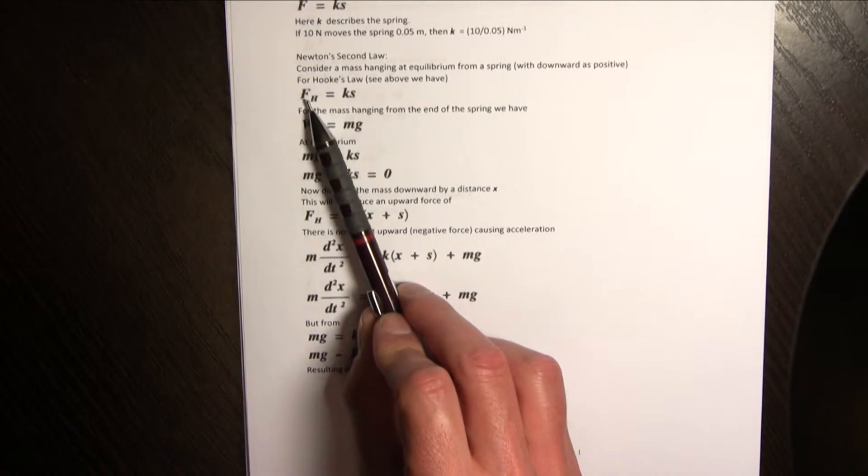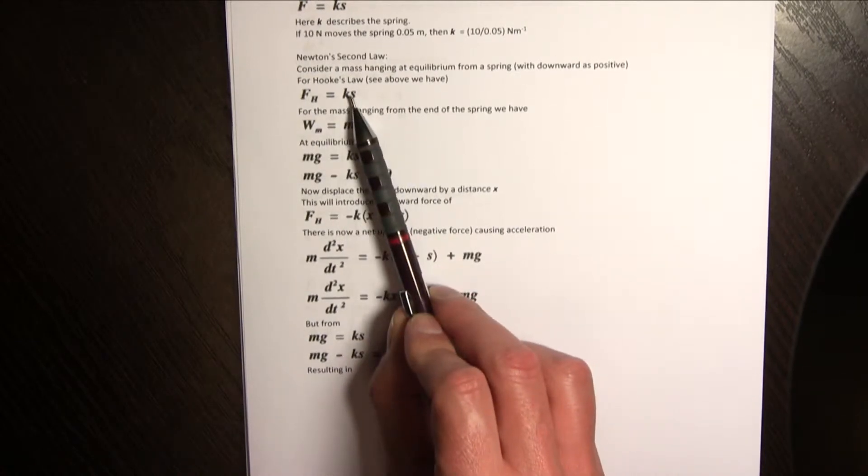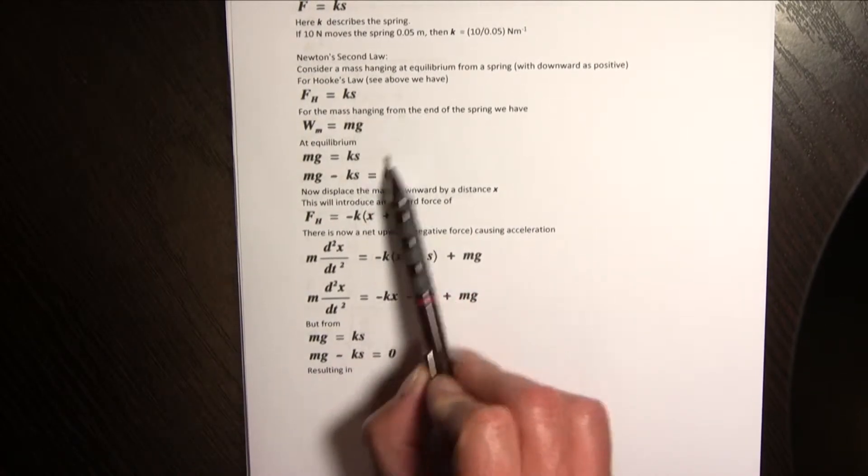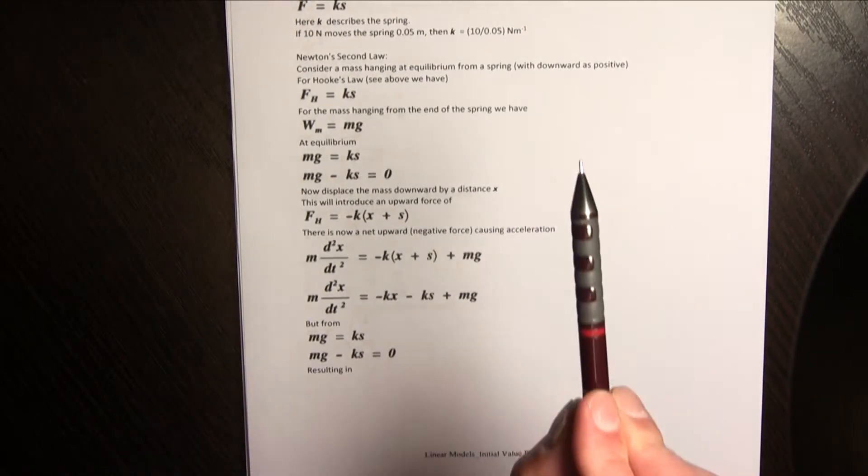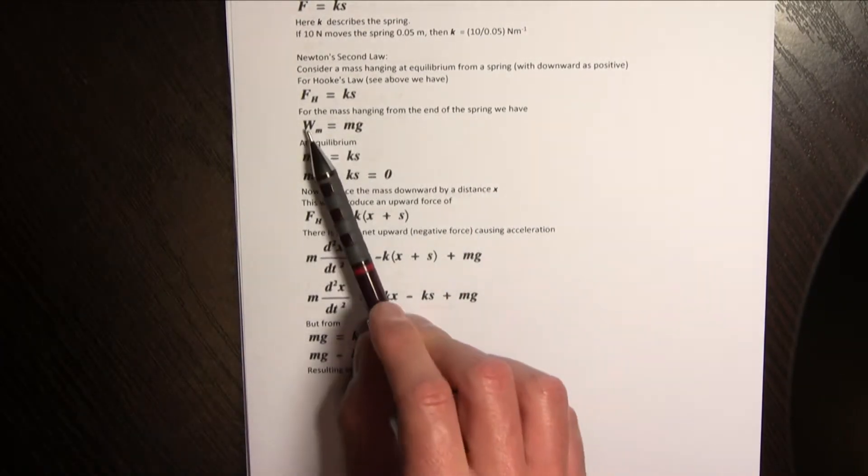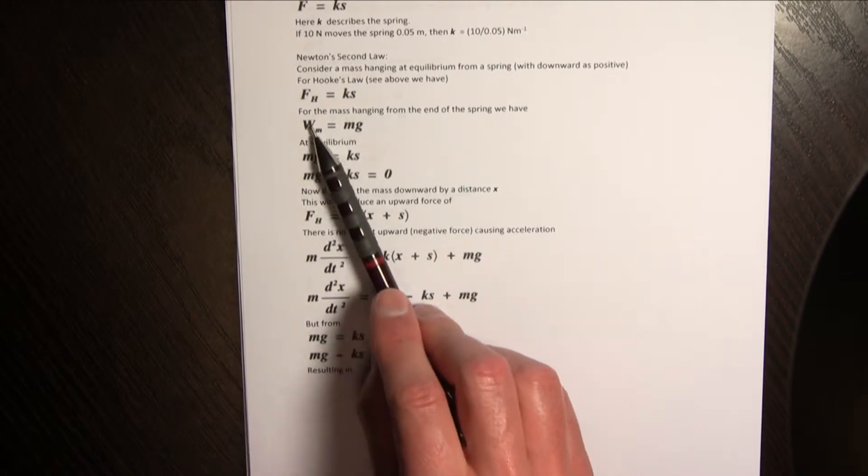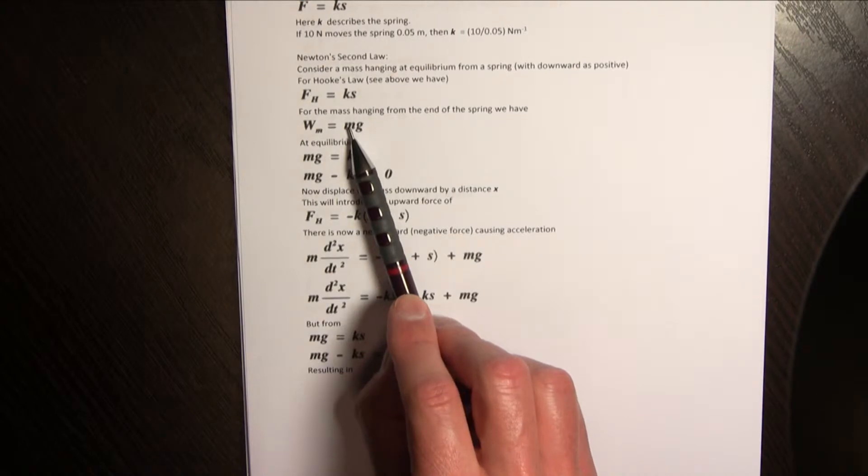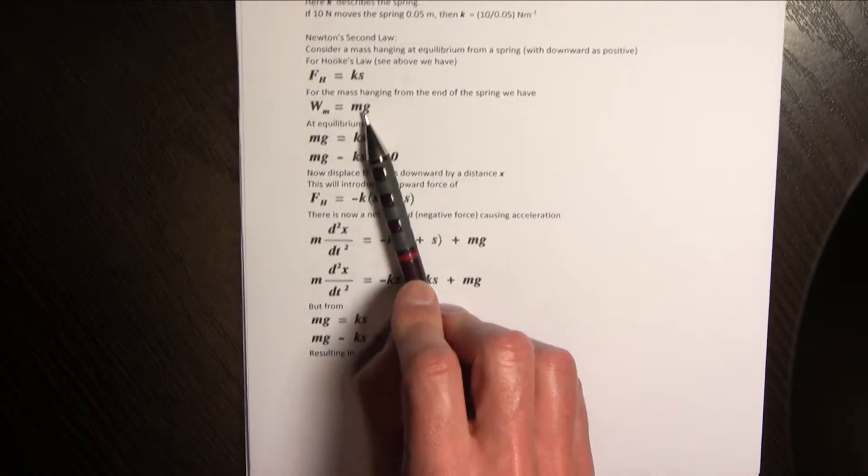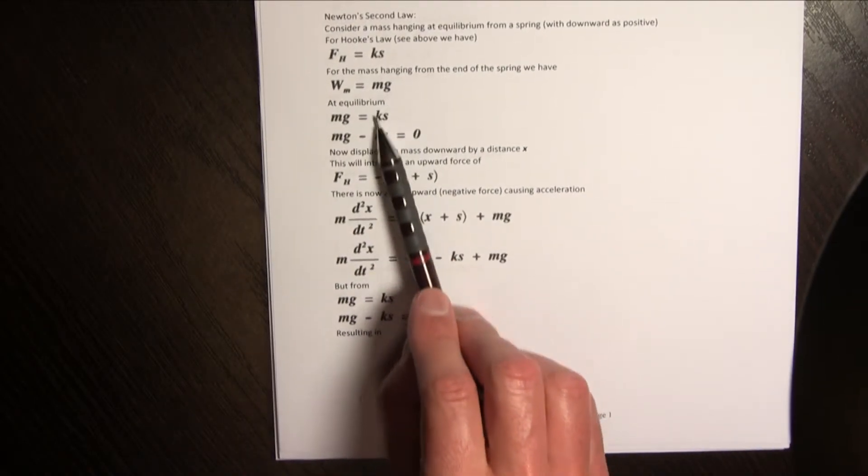So there'll be this restoring force in the spring equal to ks and we'll note later on it's negative ks because we're taking positive in the downward direction so upward is negative, and the mass that we hang from the end of the spring well we know that that's equal to mg, the mass of the object times the gravitational acceleration g.